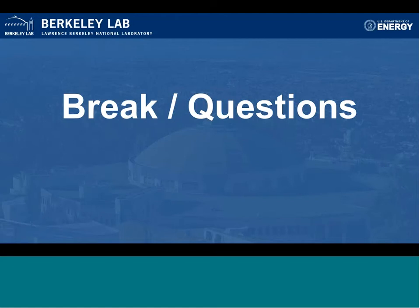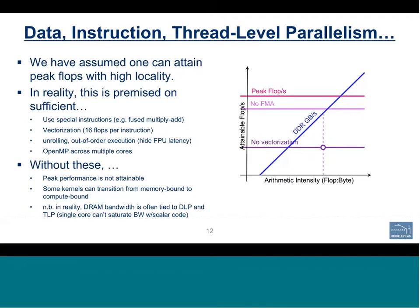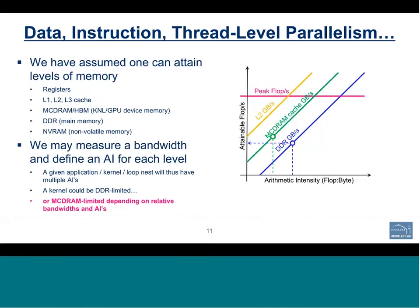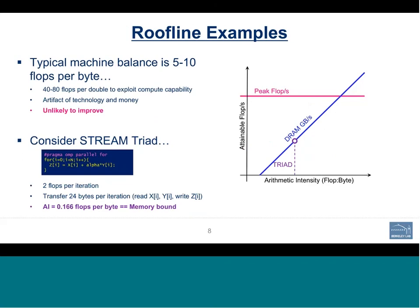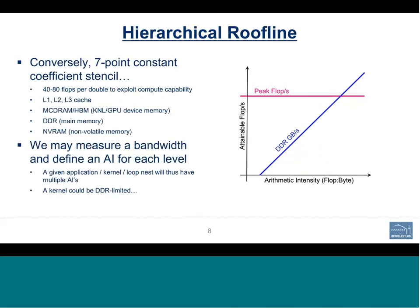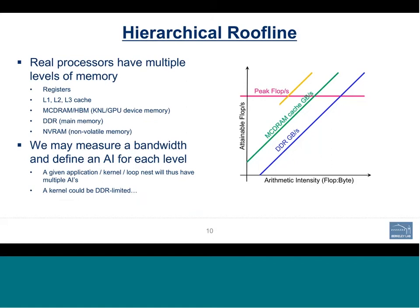There is a question on where the 0.166 arithmetic intensity comes from — that is 2 flops divided by 24 bytes. Another question from slide 11 asks: are the same kernels yielding different AIs for different memory levels? Yes — consider a kernel whose active working set fits in MCDRAM but whose total footprint does not. Imagine a 32 GB total problem with an 8 GB active working set reused 20–30 times before moving to the next chunk. This gives multiple tiers of locality with different arithmetic intensities at each memory level.